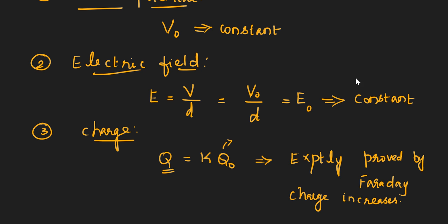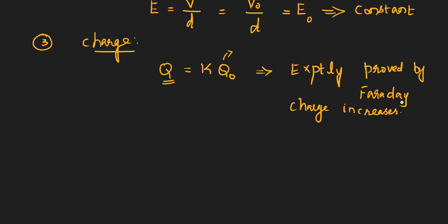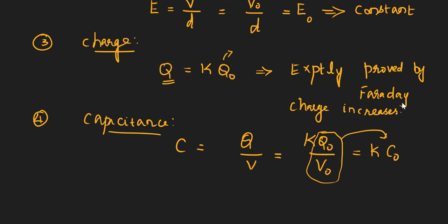Now let's write capacitance. What is the formula for capacitance? C equals Q divided by V. Q is KQ0, V doesn't change, it will be V0 only. So we can write this as K times C0. This Q0 by V0 will become C0, which means C is greater than C0. So capacitance increases.